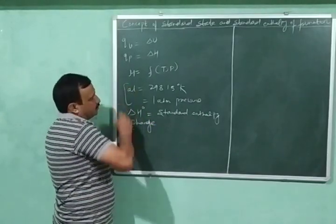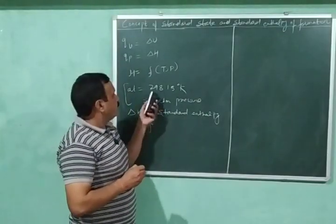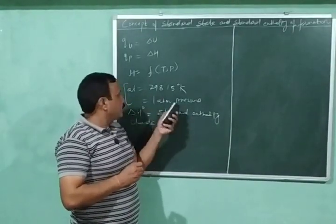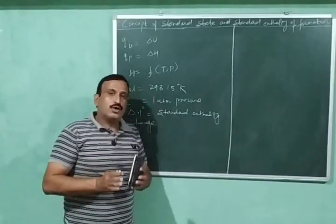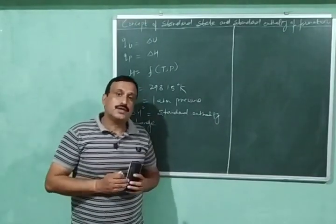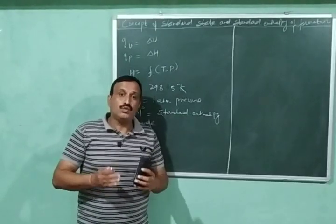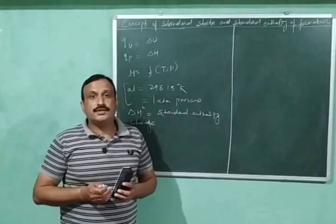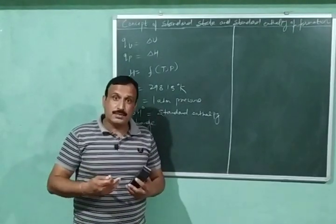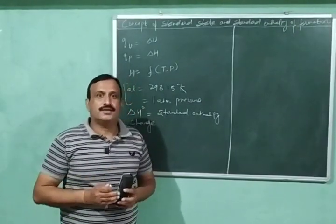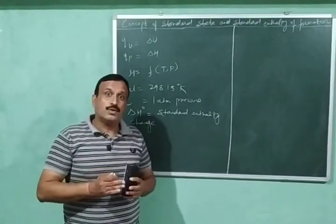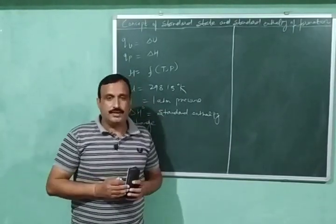These conditions — temperature of 298.15 K and pressure equal to one atmosphere — are called standard state conditions. These conditions are also very important when we want to compare the change in enthalpy of two reactions, because for comparison purposes both reactions must occur under the same conditions, or their reactants and products must be under the same conditions.